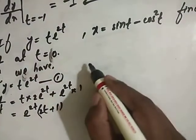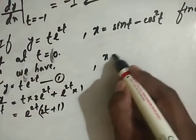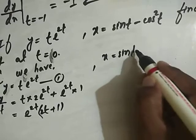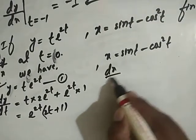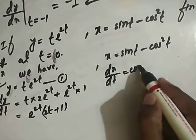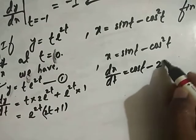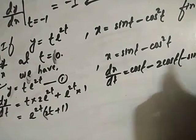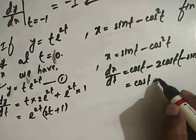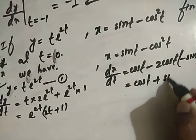Now differentiating x: dx/dt equals cos t minus 2 cos t times (minus sin t), which simplifies to cos t plus 2 cos t sin t, or cos t plus sin 2t.